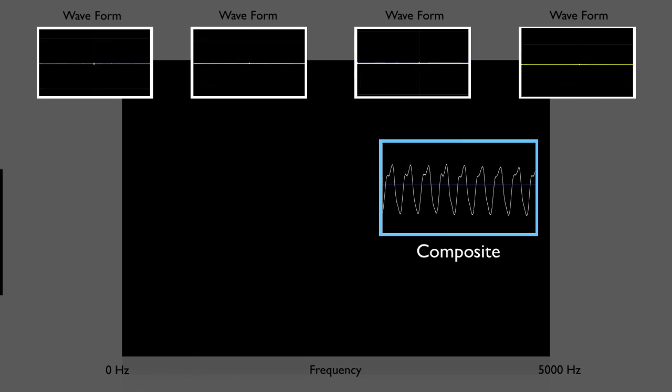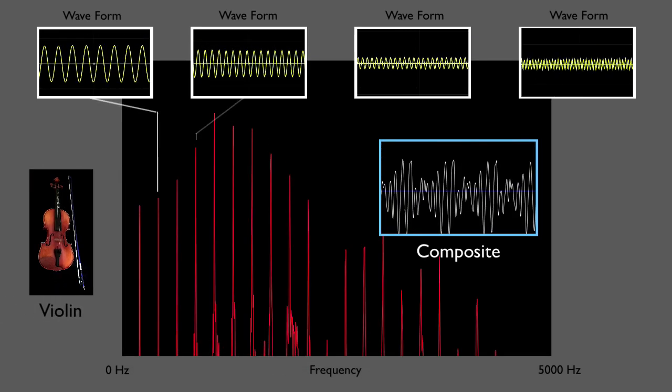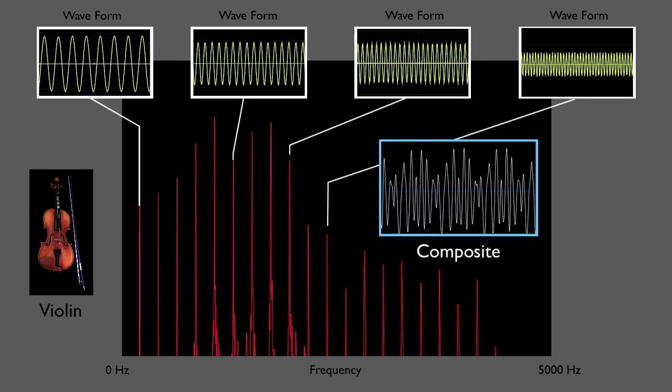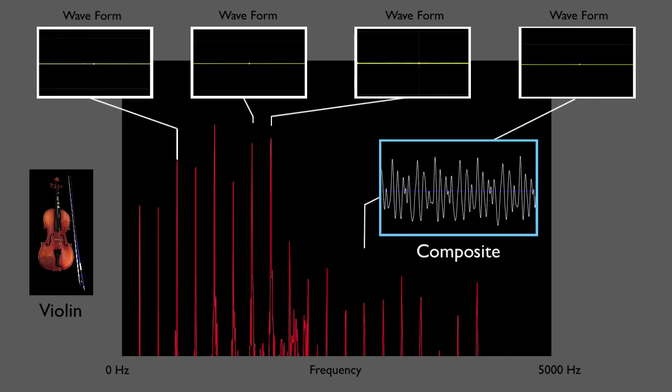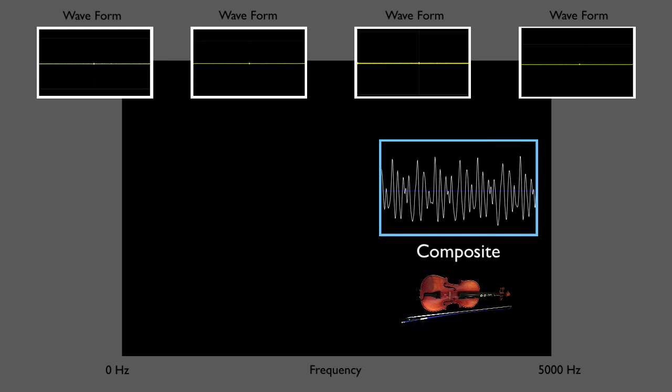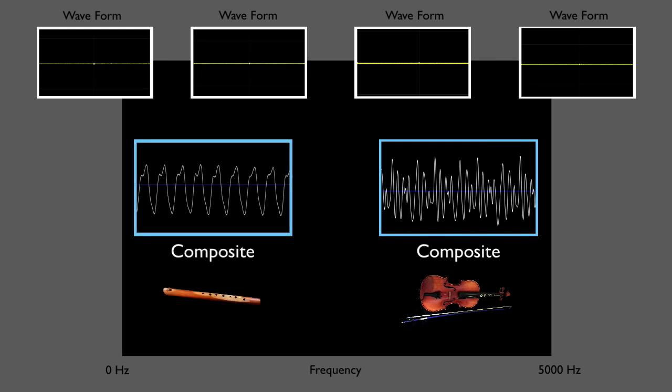Now I'll play the same note on a violin. Much more going on, eh? You can see this by the much more complicated-looking composite wave, amazingly for the very same note as the less complicated flute.